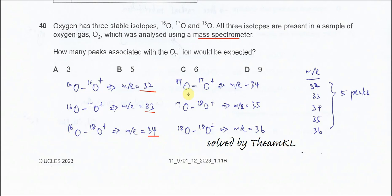And also it could be 17-17, giving mass 34. 17-18 gives mass 35. 18-18 gives mass 36.